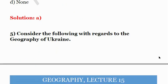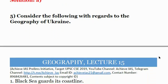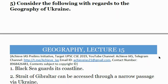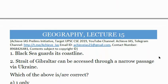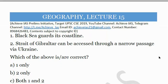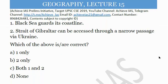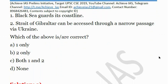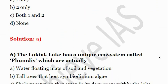Fifth question: Consider the following with regards to the geography of Ukraine. First, the Black Sea guards its coastline. Second, the Strait of Gibraltar can be accessed through a narrow passage via Ukraine. Only the first statement is correct — the Black Sea guards Ukraine's coastline. The answer is A.